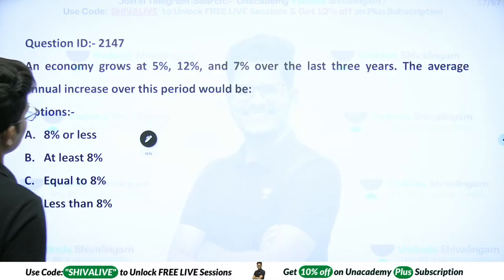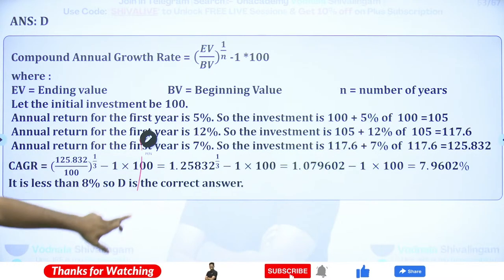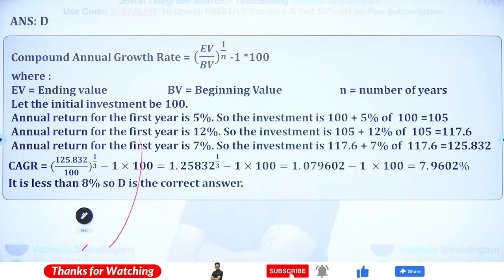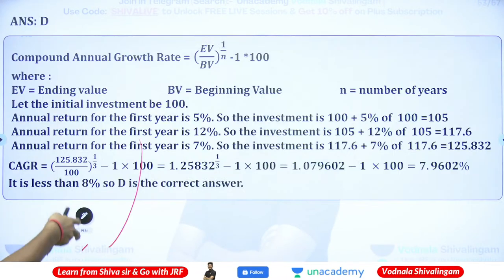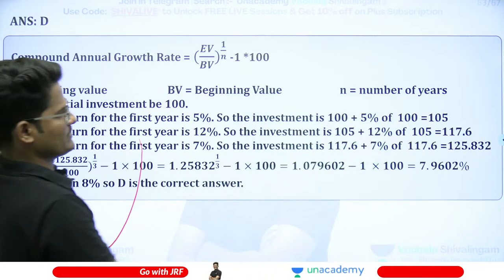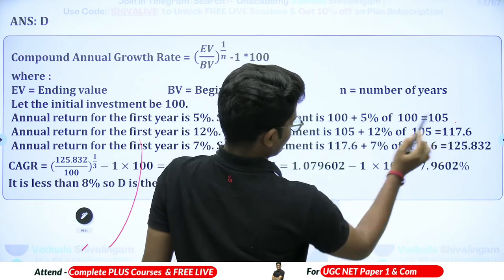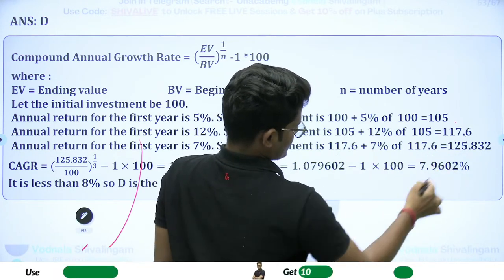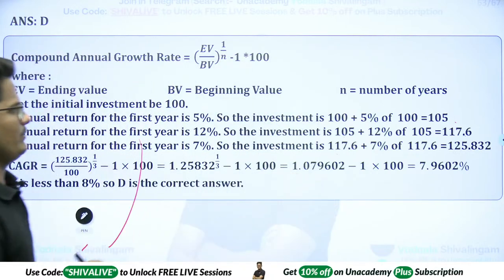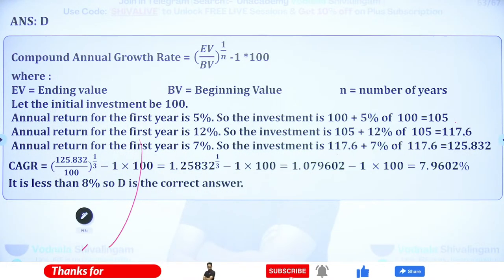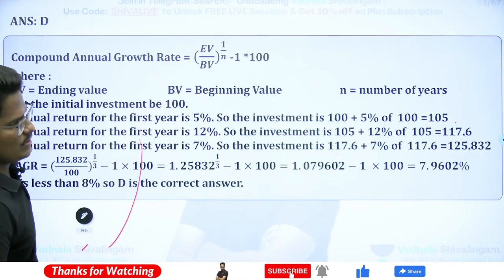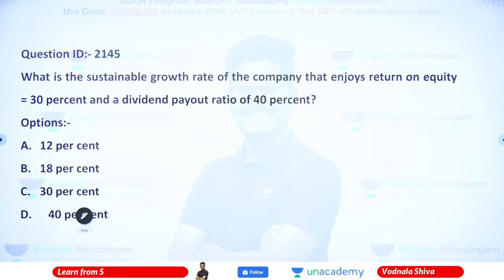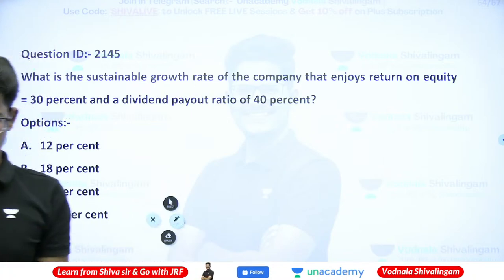Question 26: Growth rates of 5%, 12%, 7% over 3 years — what is the average annual increase? Answer is D — less than 8%. Use compound annual growth rate formula: CAGR = (EV ÷ BV)^(1/N) − 1 × 100. Starting at 100: 100 × 1.05 = 105; 105 × 1.12 = 117.6; 117.6 × 1.07 ≈ 125. So CAGR = (125 ÷ 100)^(1/3) − 1 = approximately 7.90%, which is less than 8%.